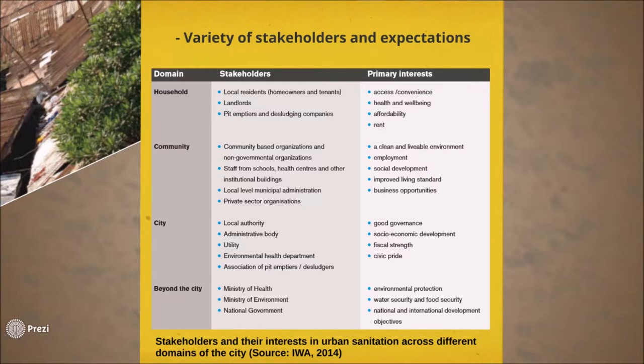For example, local residents prioritize access, convenience and affordability. Community-based organizations prioritize a clean and healthy environment, employment and business. City authorities prioritize good governance and civic pride. Embarking on development projects that factor the expectations of all stakeholders could be a daunting task, as each one of them would want their needs prioritized.